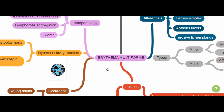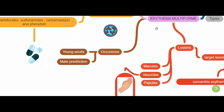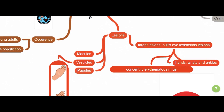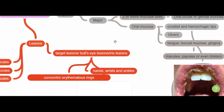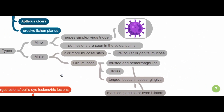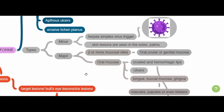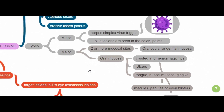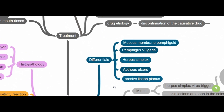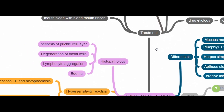For a quick recap: erythema multiforme is a hypersensitivity reaction seen in young male adults. Lesions are seen on the skin as well as the mucous membranes; bull's eye or target lesions are characteristic. Erythema multiforme minor is usually triggered by infectious factors, so treatment is aimed at treating the infection such as herpes simplex. Erythema multiforme major is usually due to certain drugs; discontinuation along with symptomatic treatment is provided. Differentials include pemphigus vulgaris, herpes simplex, aphthous ulcers, and erosive lichen planus. The histopathology is usually non-pathognomonic.